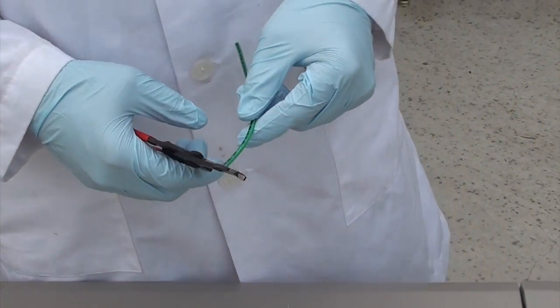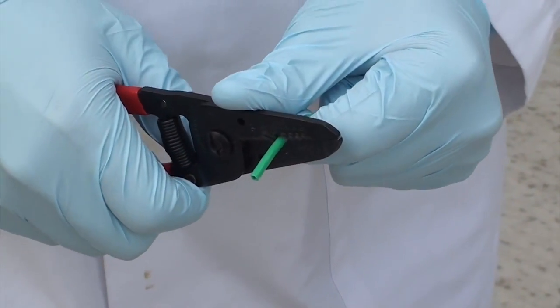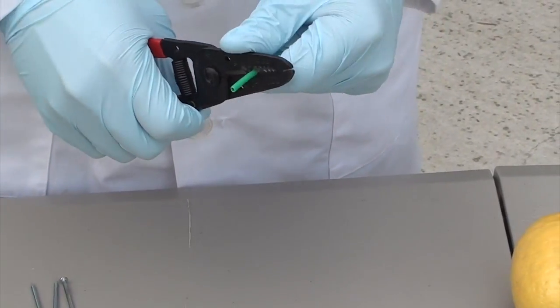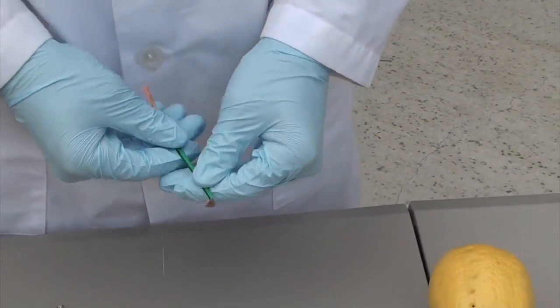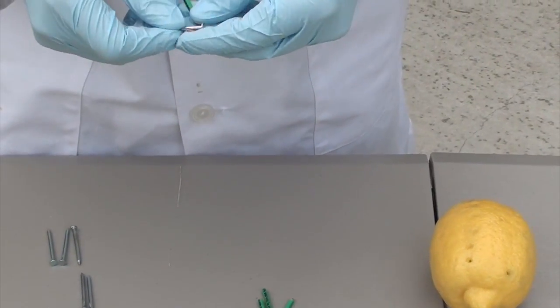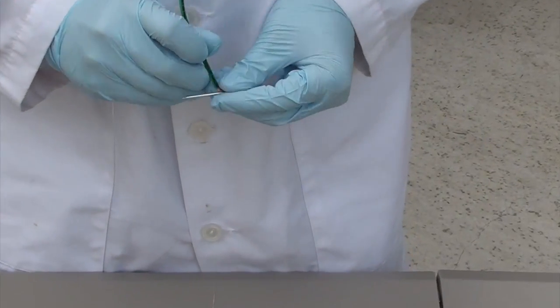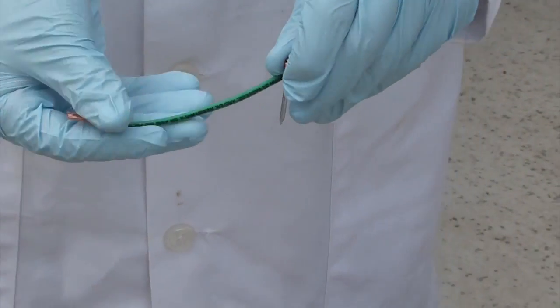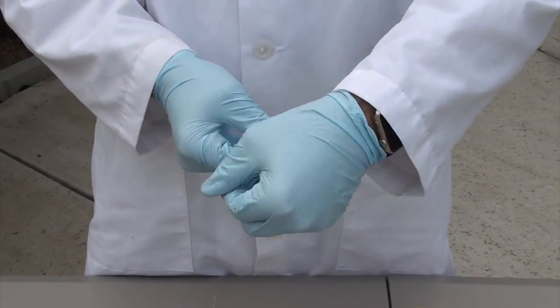We are going to cut the insulation off both sides of the copper wire and we are going to connect one side to a zinc nail. So the zinc nail is going to be our negative side and the copper wire is going to be our positive side.